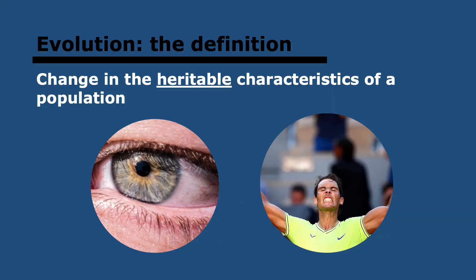Evolution, and this definition is very important, is the change in the heritable characteristics of a population. Let's distinguish between heritable and acquired. Your eye color is heritable — you can't change that, it's passed on from your parents. However, the size of your arms, as you can see with the tennis player Nadal, his left arm, which is the one he uses to play tennis, is much more developed than his right arm. But this imbalance will not be passed on to his descendants — this is acquired. Darwinian evolution, which is the one we now know is true, says that only the heritable characteristics are passed on, so these are the only ones that count for evolution.